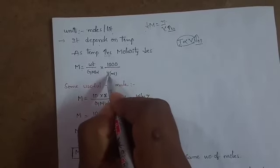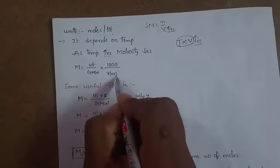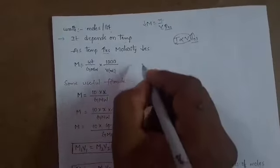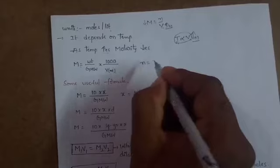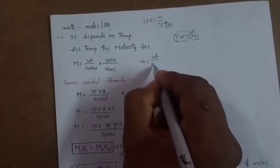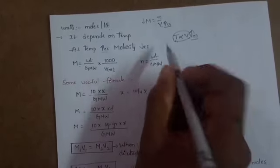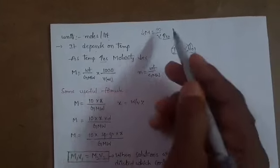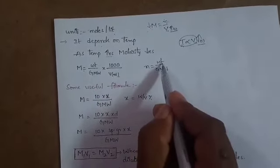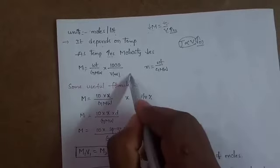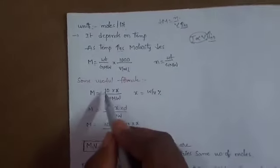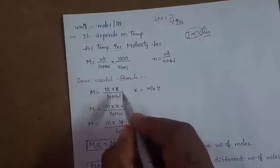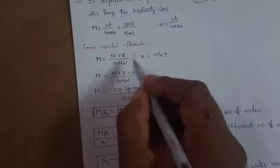To find the molarity of any solution: M = (weight / gram molecular weight) × (1000 / volume in mL). This is derived by substituting n = weight / gram molecular weight into the molarity formula. For competitive exams, we need to know some useful formulas.